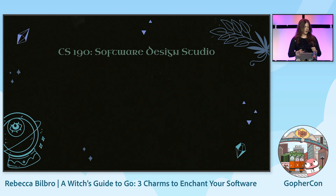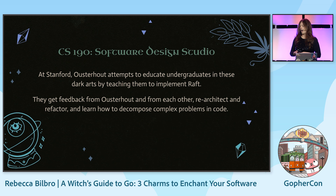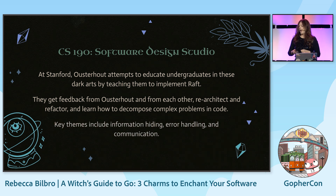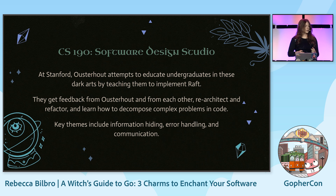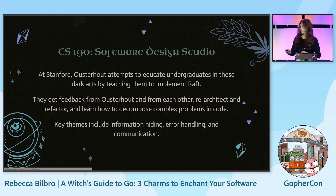In his class at Stanford — CS 190, Software Design — he teaches undergraduate computer science students about the dark arts. He teaches them how to implement the Raft consensus algorithm. Students start building parts of it, receive feedback, give each other feedback, and iterate and refactor throughout the semester. The key themes he reinforces are information hiding, error handling, and communication through documentation. I'd like to explore those three themes in the context of the distributed system we've been building at Rotational, because we used his class and book as inspiration to guide our architecture and design of Ensign.